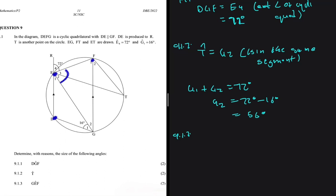But with that said, we can say that F1 is equal to 72 degrees. This angle here, we can say it is equal to 72 degrees because it's alternating with E4.